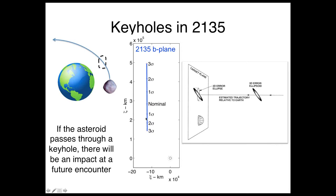If this ellipse on the target plane falls on the Earth, then you have some possibility of a collision. In 2135, the three sigma extent is here, the Earth is down here. There is no possibility of collision, but there is a possibility of a deflection onto a particular resonant period.